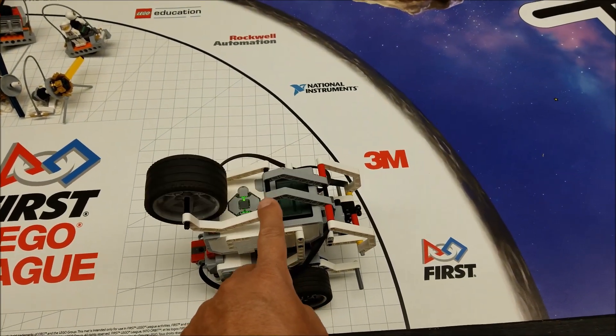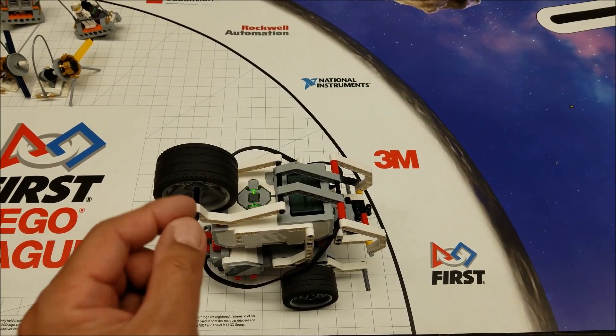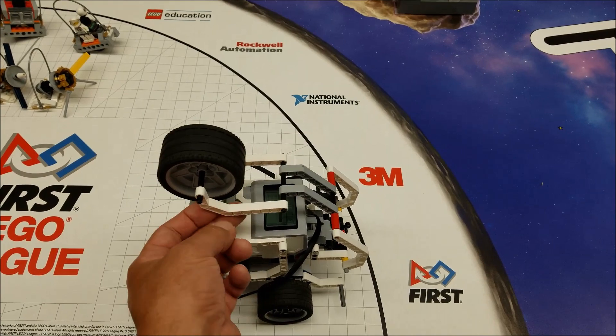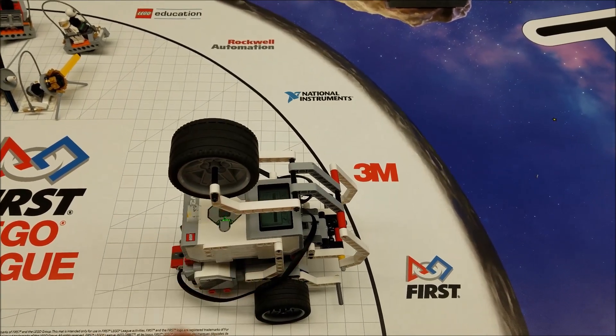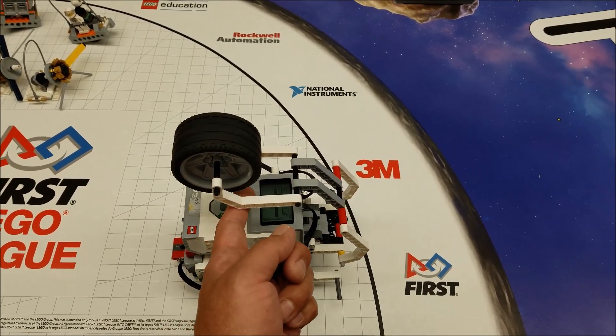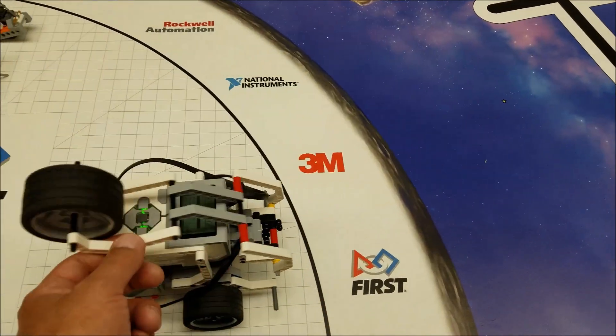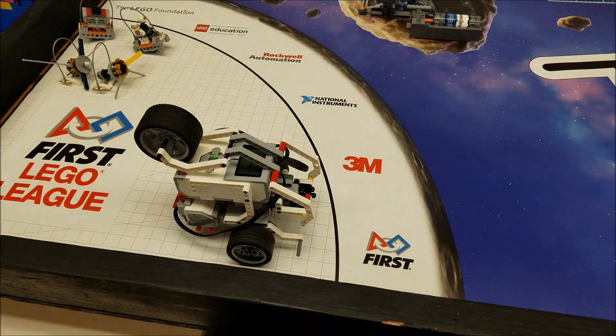When you watch this mission, you'll notice that's why I don't put the arm too far back, because it takes a lot of effort to bring it that far back. So you're going to notice I'll put it maybe here, just so it's easier for this medium motor to drop this down.